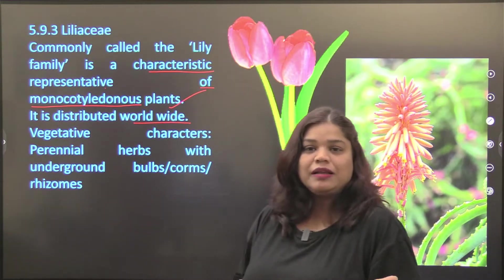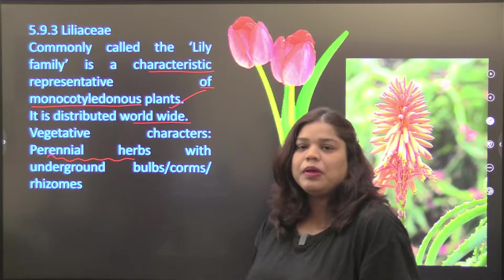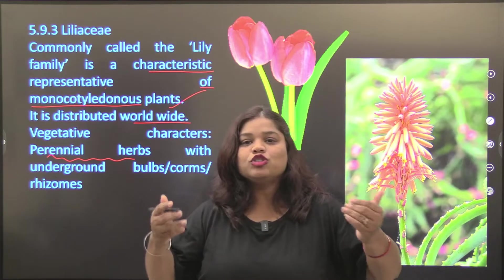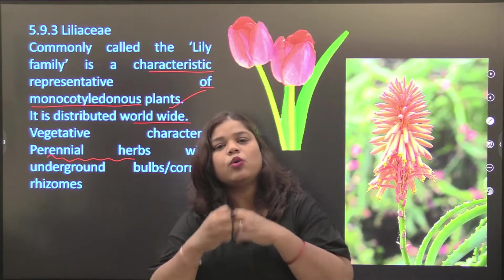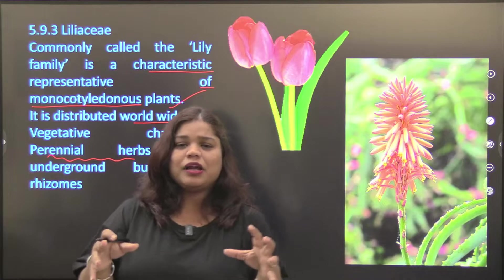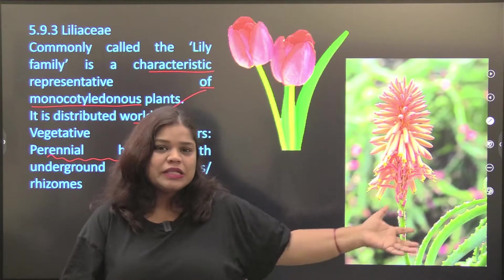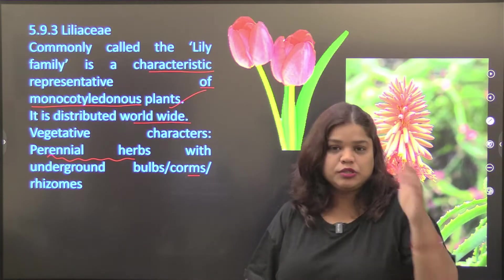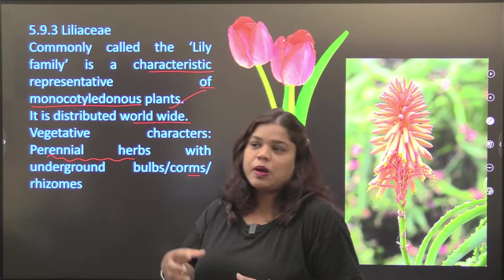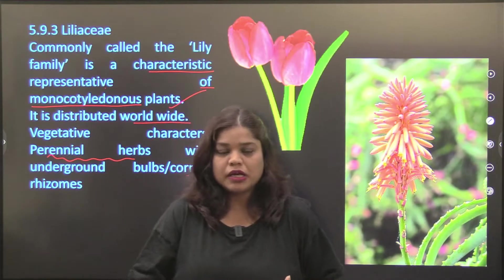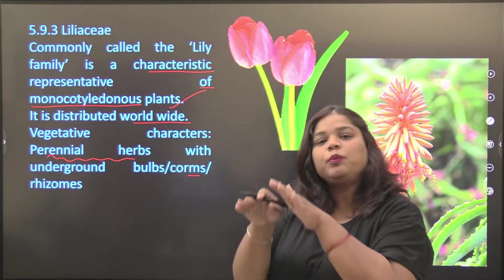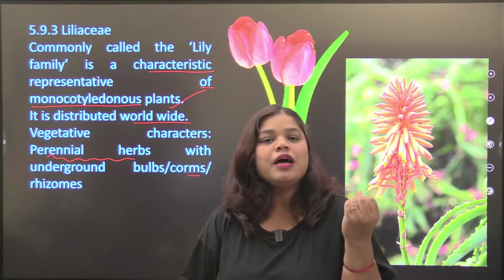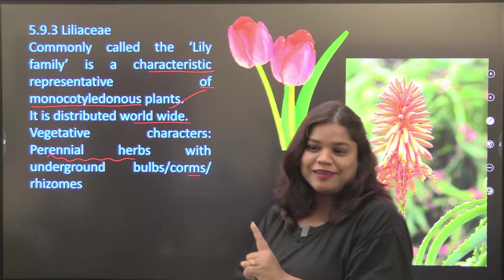Vegetative characters: perennial herbs. Perennial means they don't shed in autumn like other plants — they continue to grow. Aloe vera, for example, remains as it is — it doesn't sprout seasonally. These are your perennial plants. Underground bulbs, corms, and rhizomes. For tulips, you don't use stem cuttings — there are bulbs which you soak and put under the soil, and from there the tulip grows. Rhizomes are also present, which function as roots.